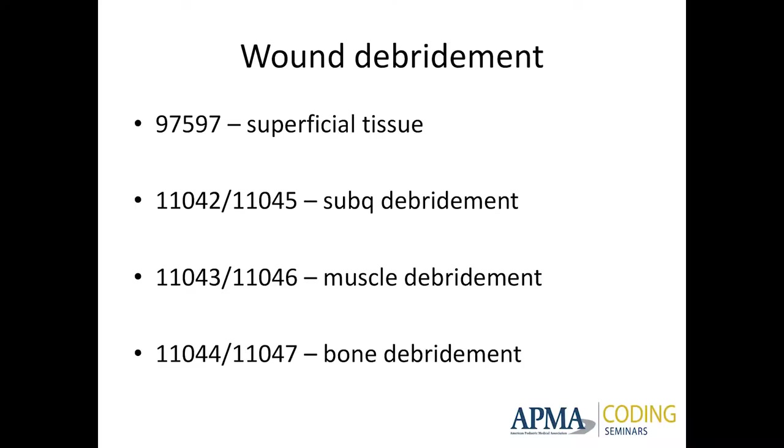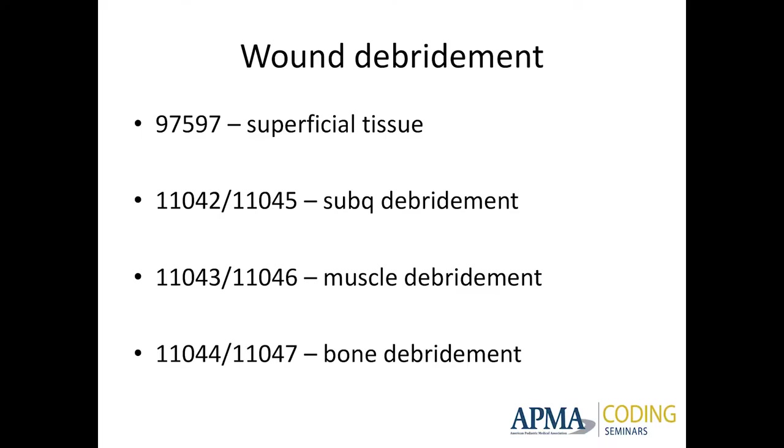Wound debridement — depth is your initial choice of which code to use. If I'm debriding just skin — there's slough on top and I'm taking that off without removing any subcutaneous tissue — that's 97597. If I'm taking out subcutaneous tissue in addition to anything above it, that's 11042 or 11045 based on size. The size threshold is 25 square centimeters: the first 25 square centimeters you bill 11042, and for each additional 25 square centimeters you bill 11045. If the wound is more than 100 square centimeters, there's a separate code for that — though that's unusual in the foot and ankle.